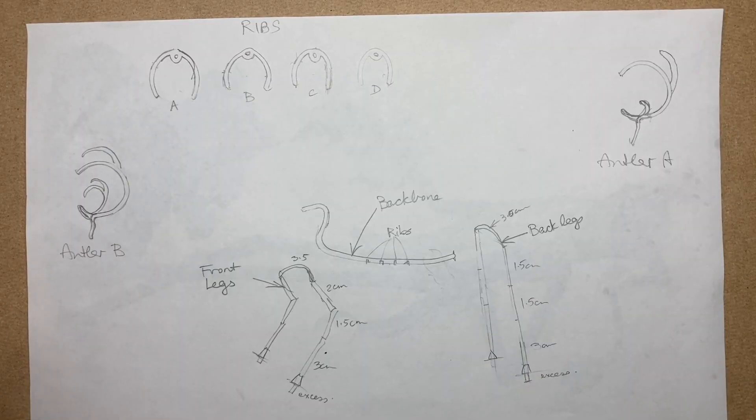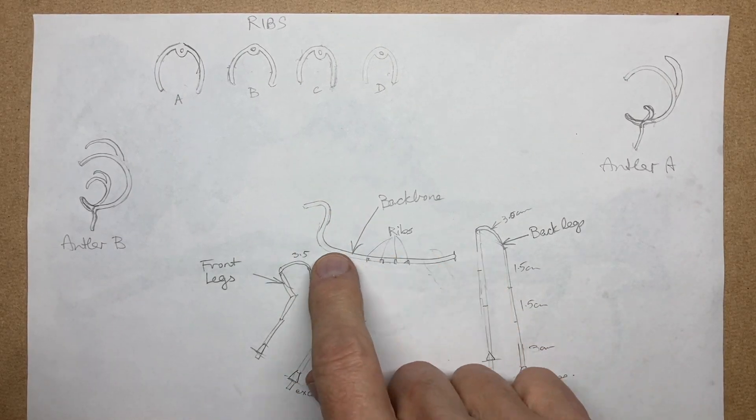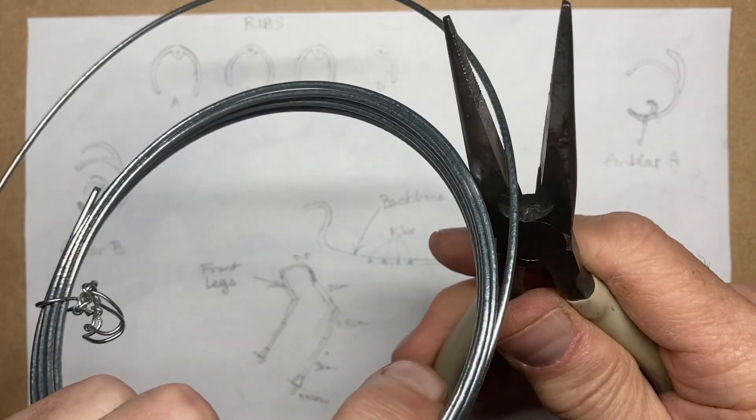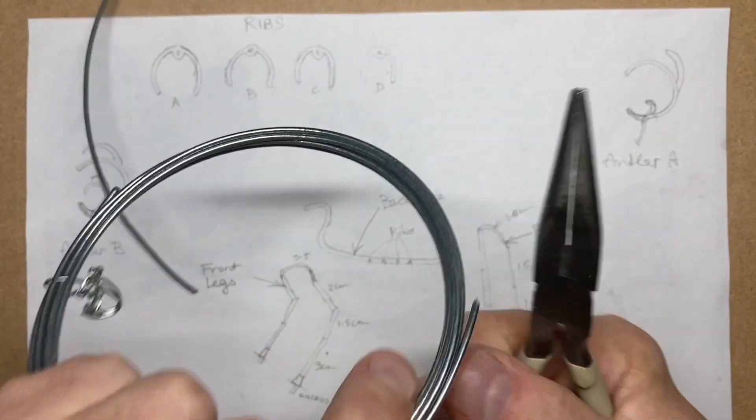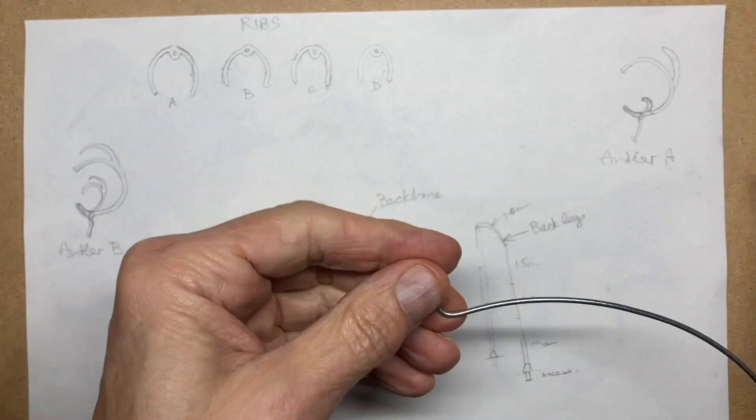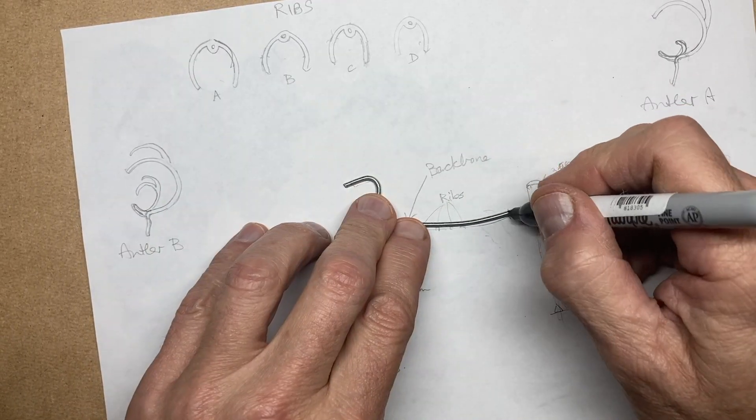So first up, we're going to create the backbone for the reindeer by using this wire as an armature to hold the whole reindeer together. So here's the two millimeter wire. Snip a bit off and then start bending it into the shape. Use your pliers to help bend the wire, especially this thick stuff, but you should be able to use your hands as well to get the right shape.